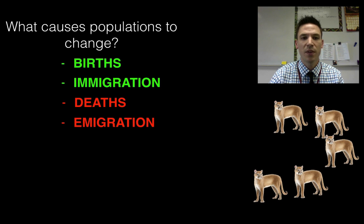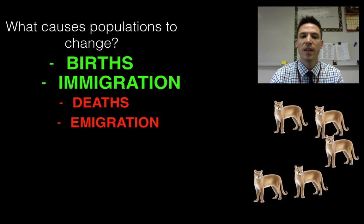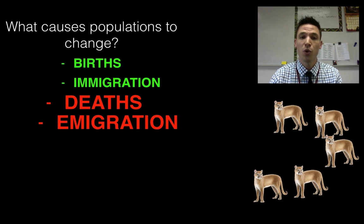So it's the interaction between births, deaths, immigration and emigration that really cause populations to change over time. It's worth noting that when births and immigration are higher than deaths and emigration we would expect the population to increase, and if deaths and emigration are higher than births and immigration then we expect the population to fall.